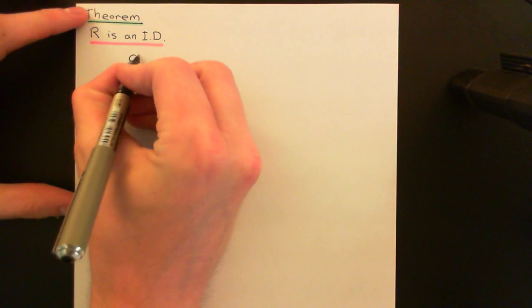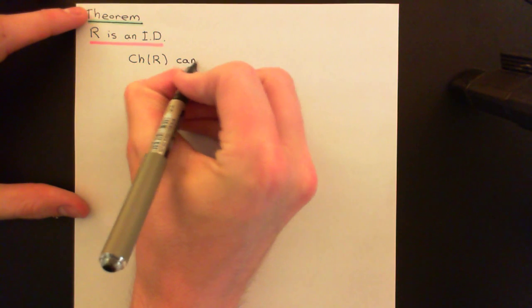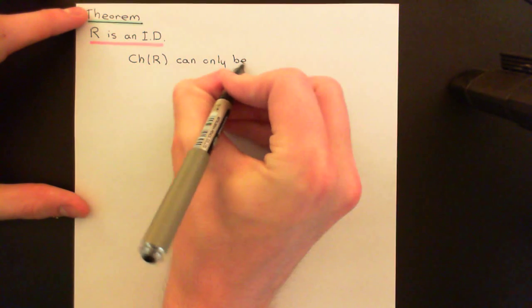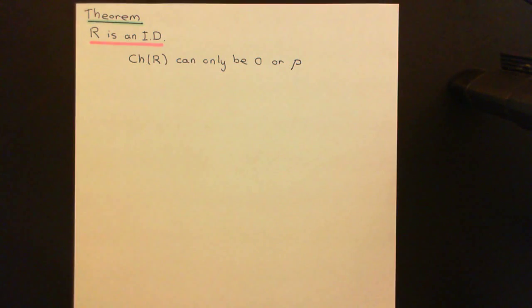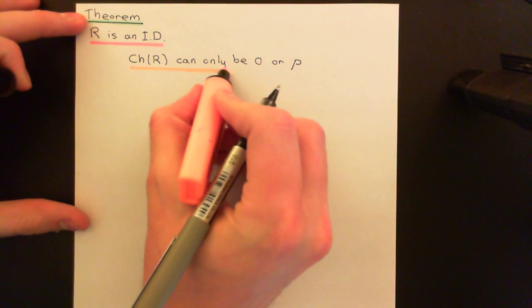In an integral domain, the only way to multiply two elements together and get zero is if one or both of those elements is equal to zero. What I'm going to show is that the characteristic of an integral domain can only be either zero, or if it's a natural number, it must be a prime natural number — like the primes you learned in school.